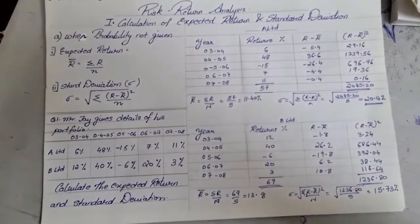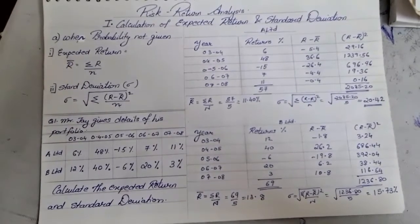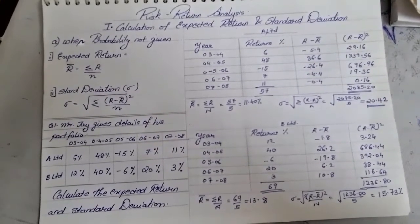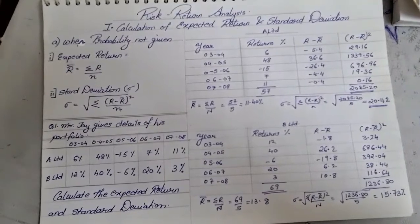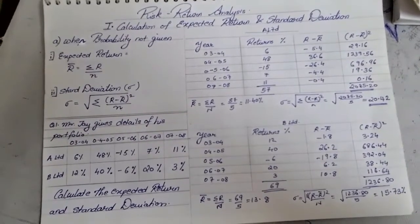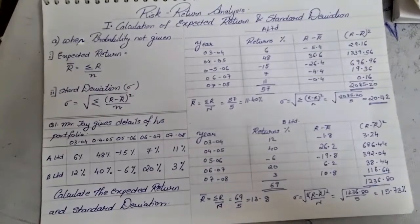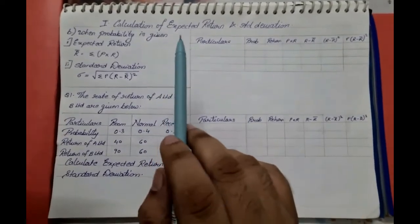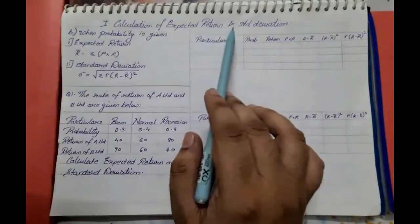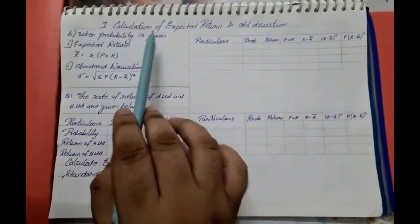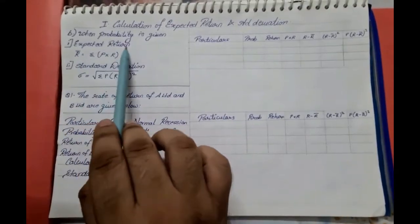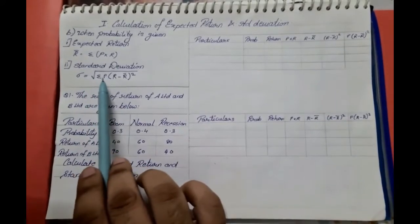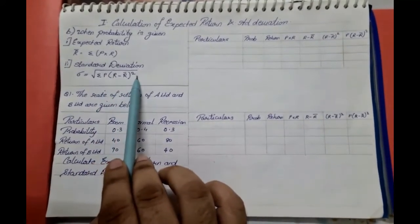With this we were able to solve sums based on expected return and standard deviation when probability was not given. Now we will be solving sums where probability is given. The second method has two formulas: expected return R-bar equals sigma P into R, and standard deviation is the root of summation P into (R minus R-bar) squared.